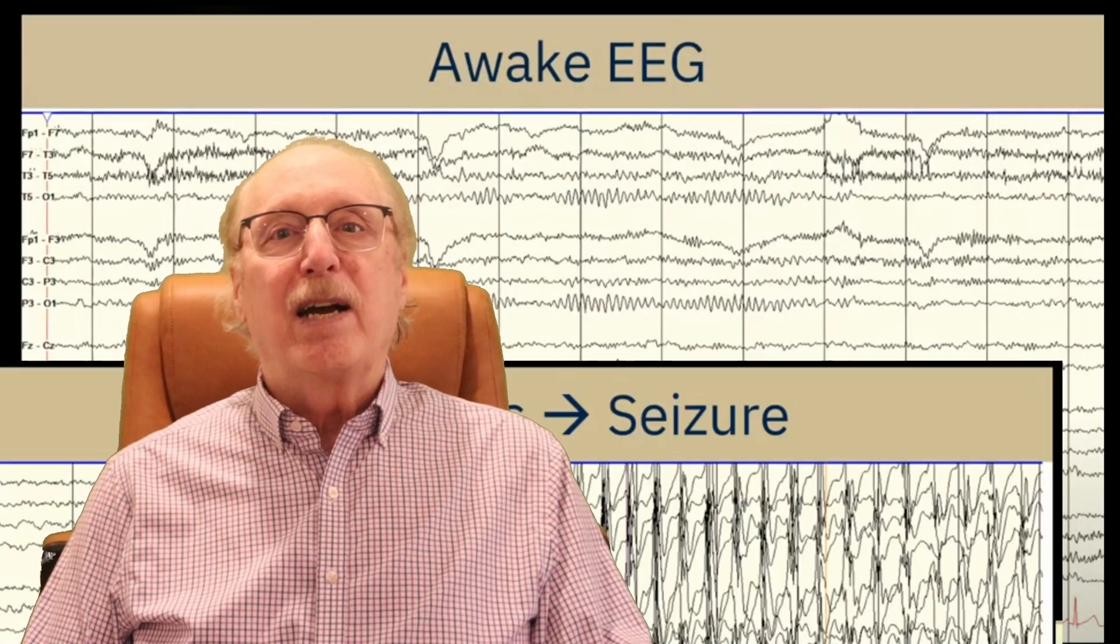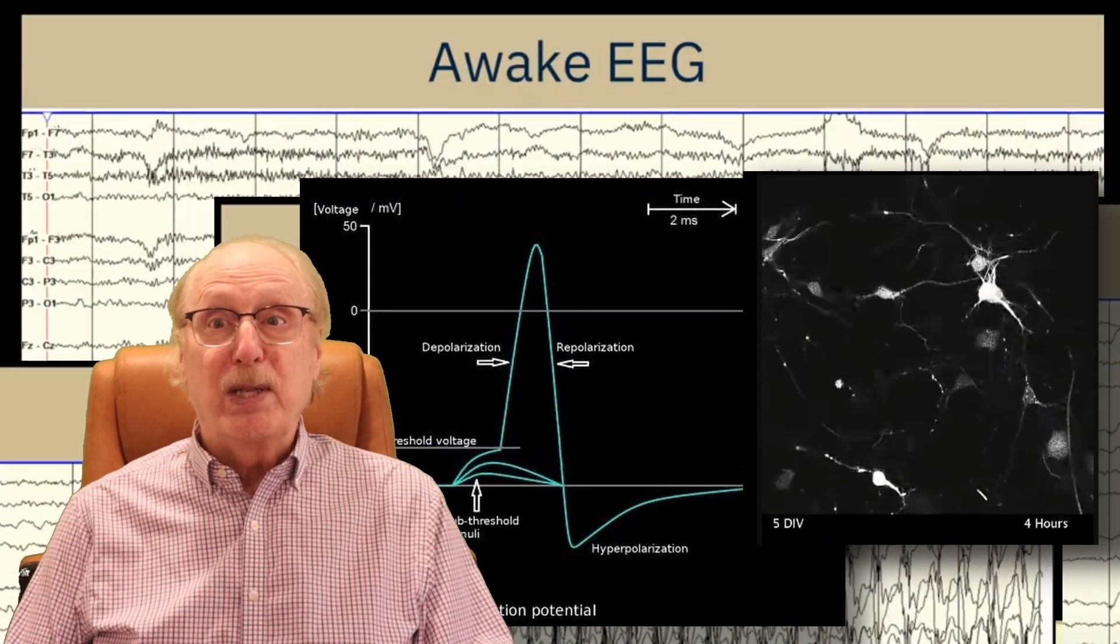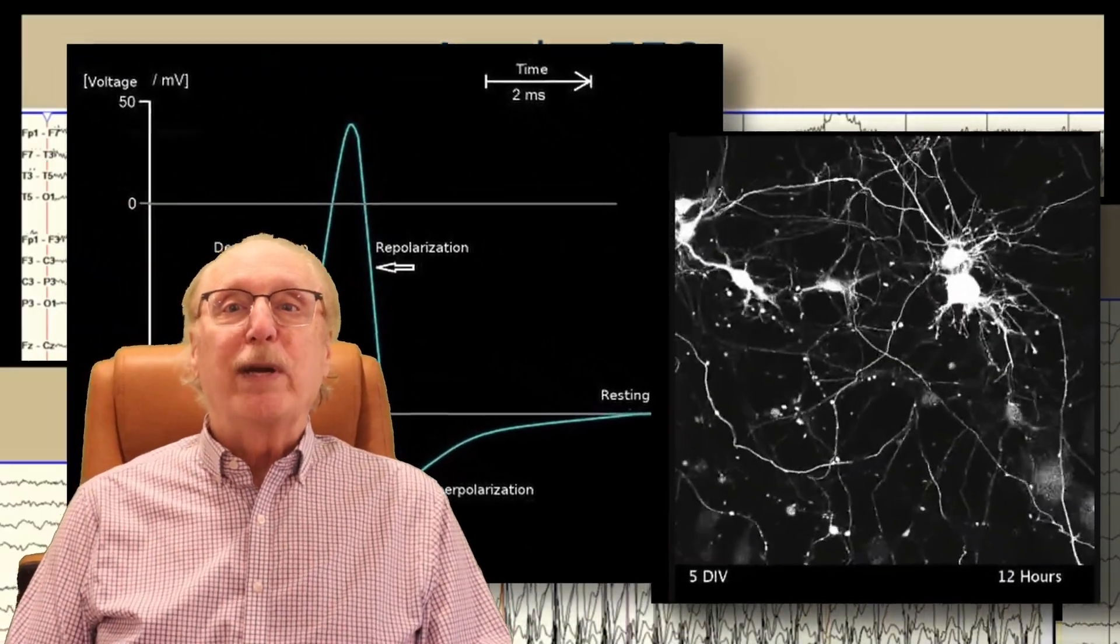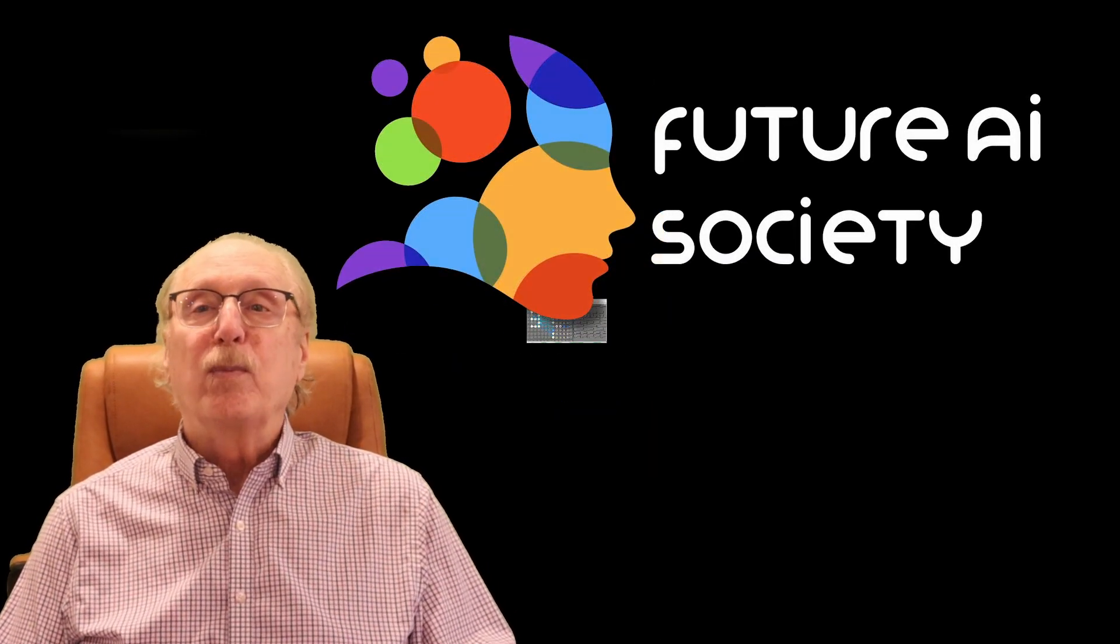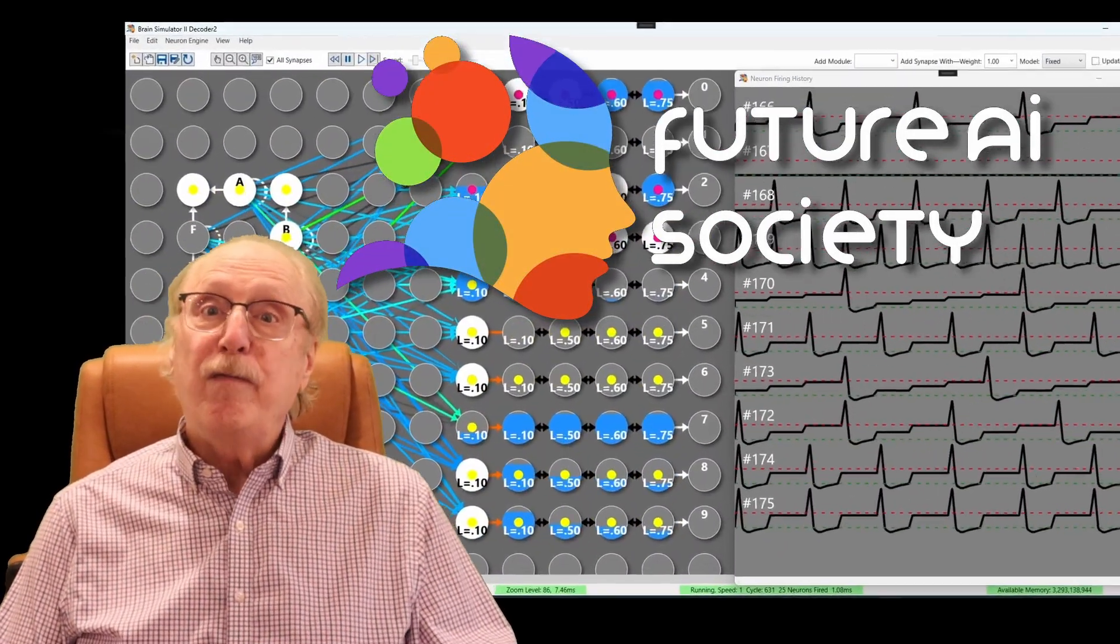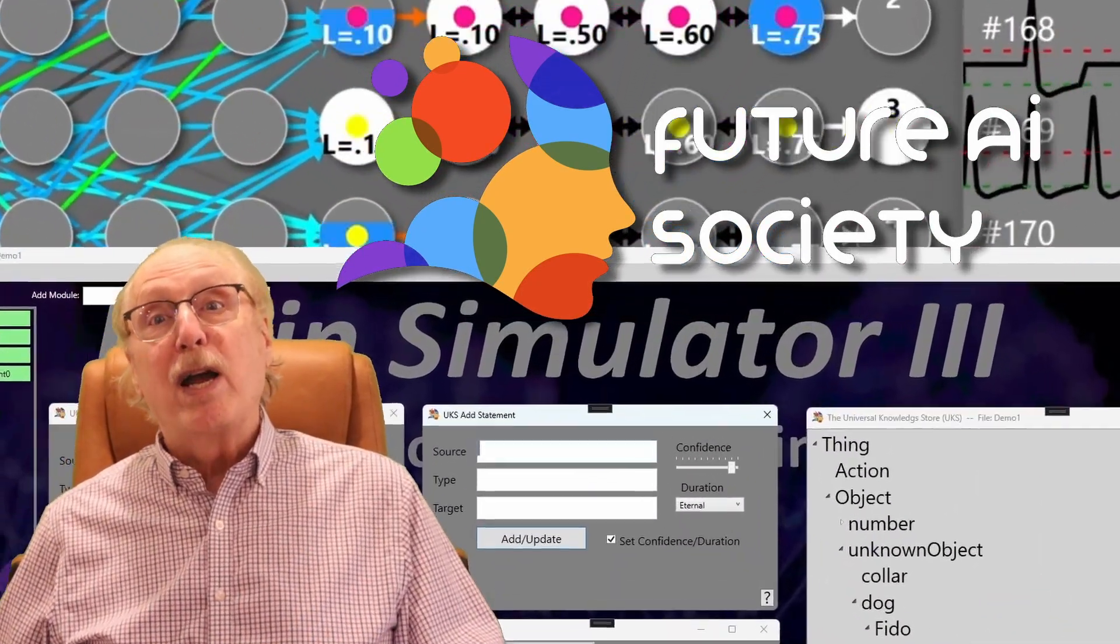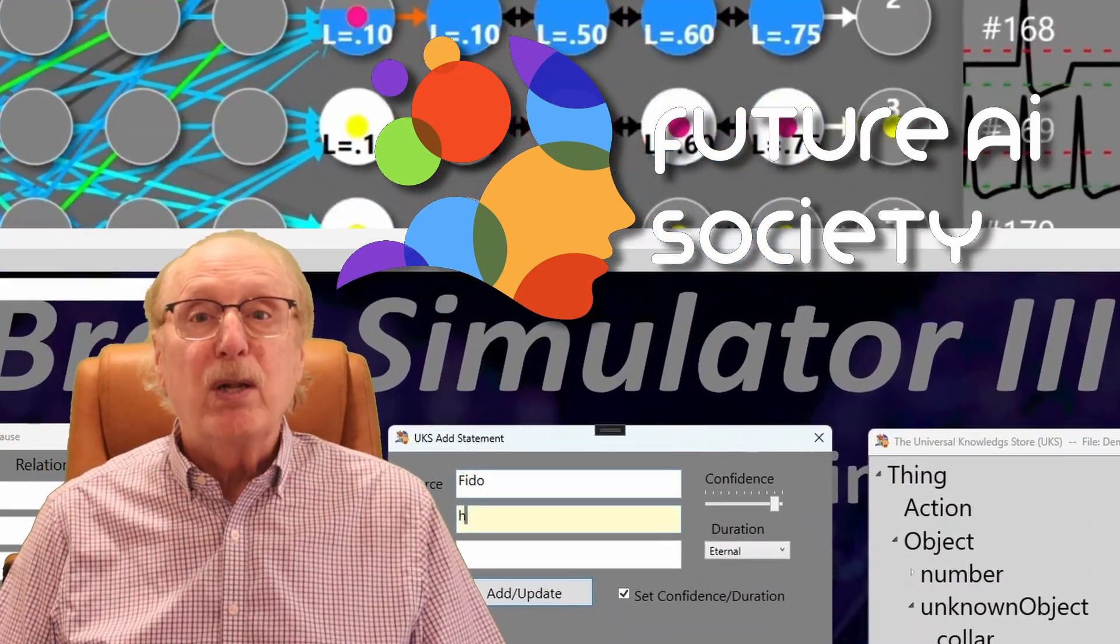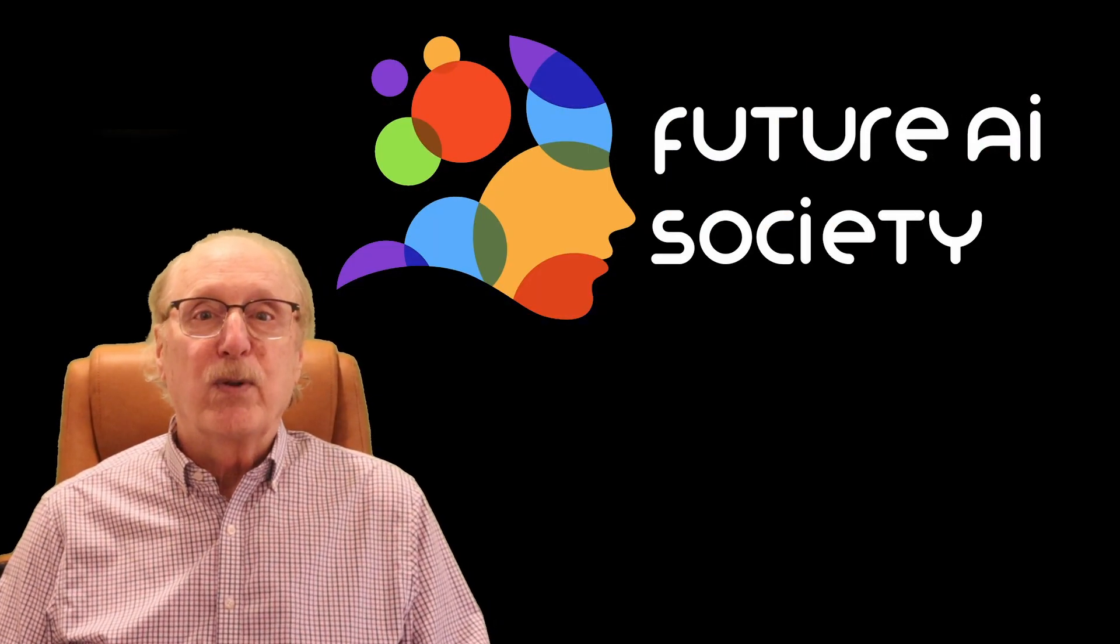I'm Charles Simon, long-time AI researcher, software developer, and manager. Beyond AI, I've developed software for neurological test instruments and neural simulators. I created the Future AI Society to explore how neuroscience can inform smarter, more human-like AI. If you are interested in this type of content, be sure to like, subscribe, and ring the notification bell because the YouTube algorithm won't surface videos like this unless you ask for them.